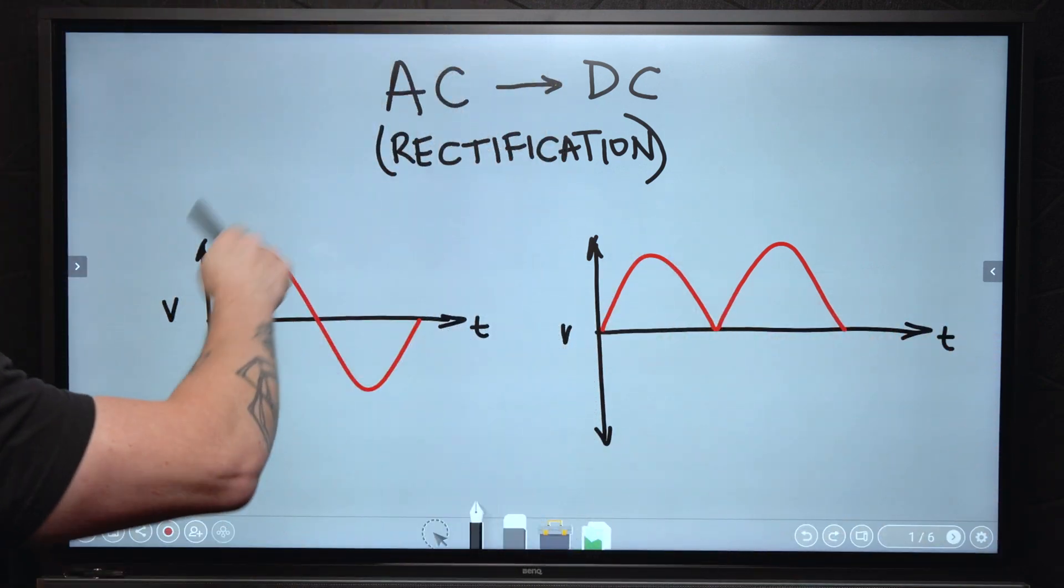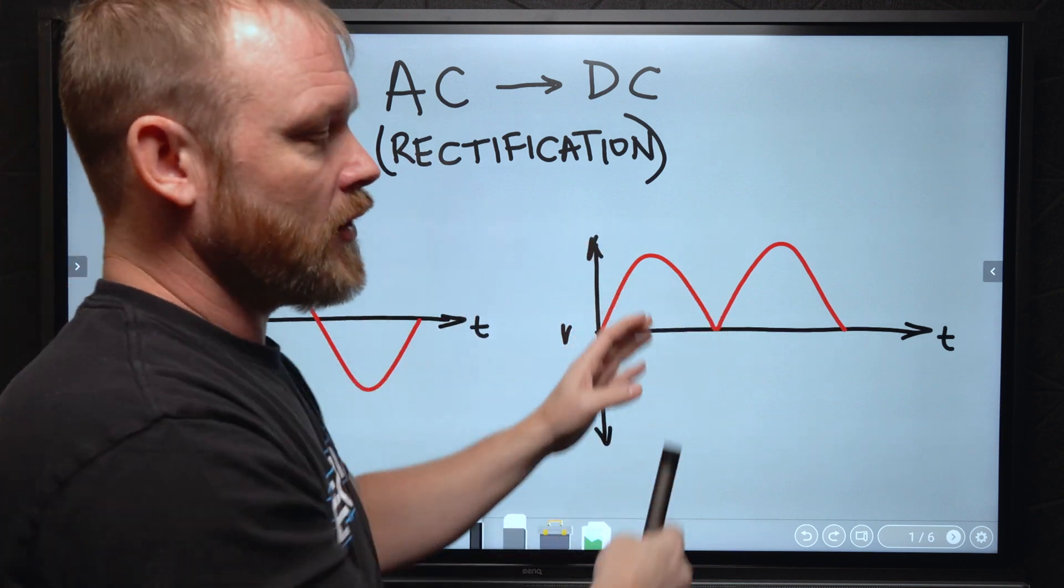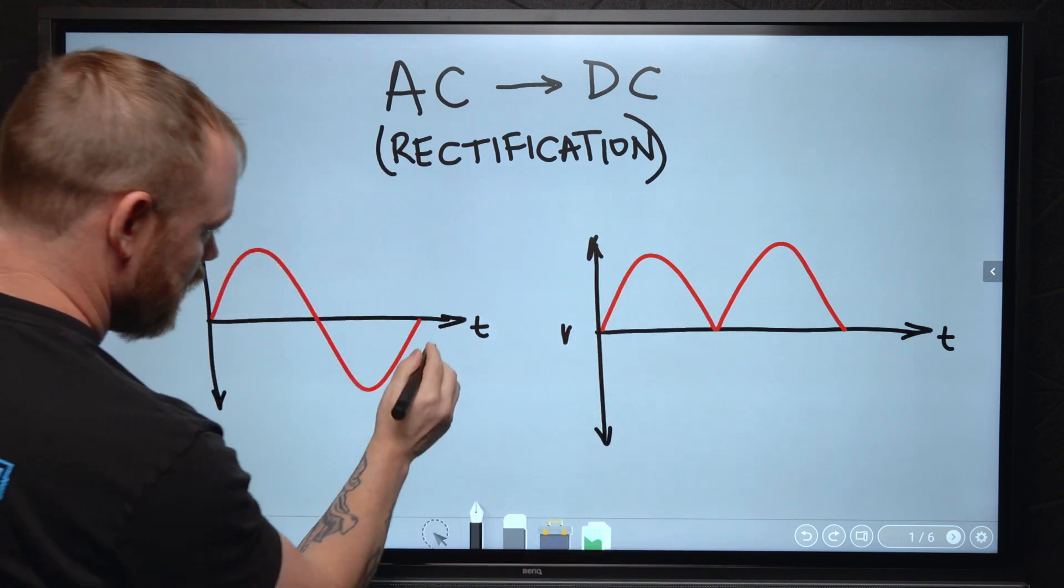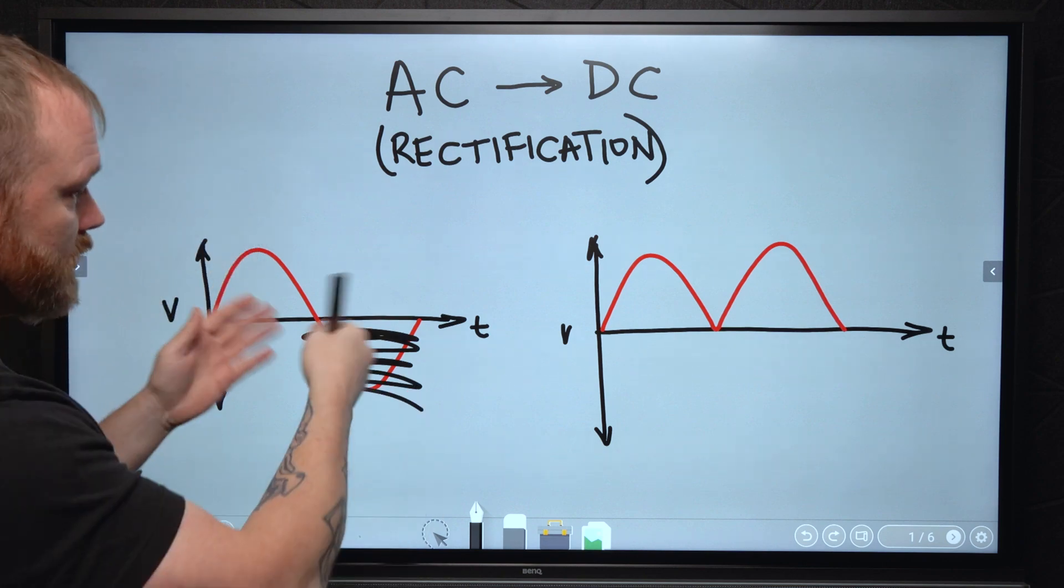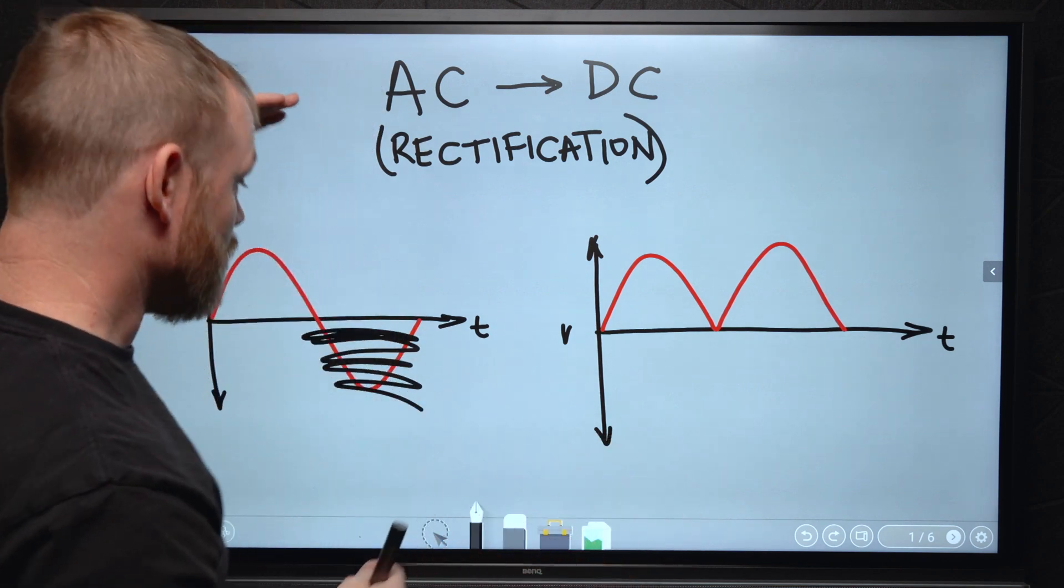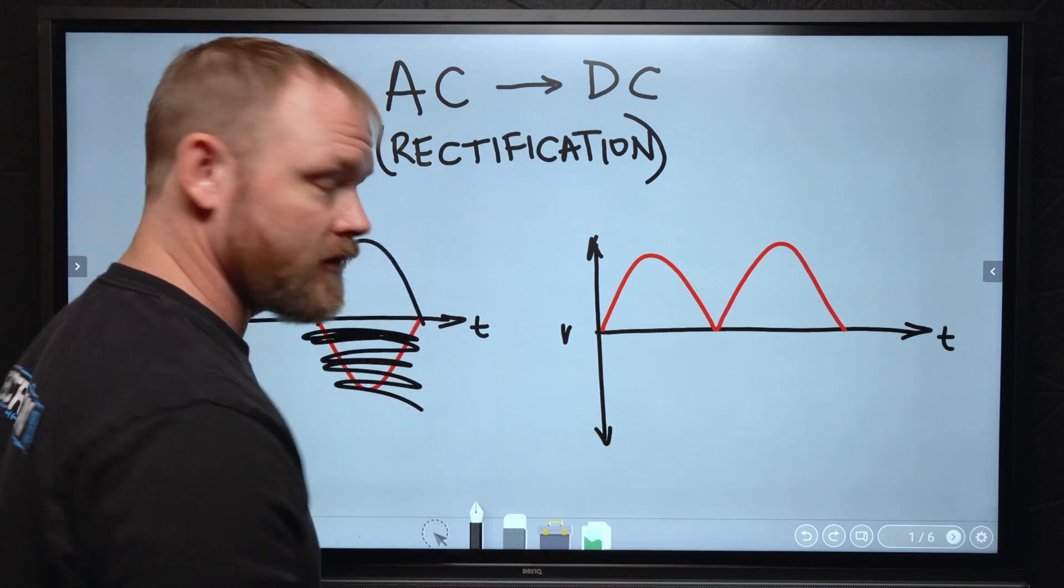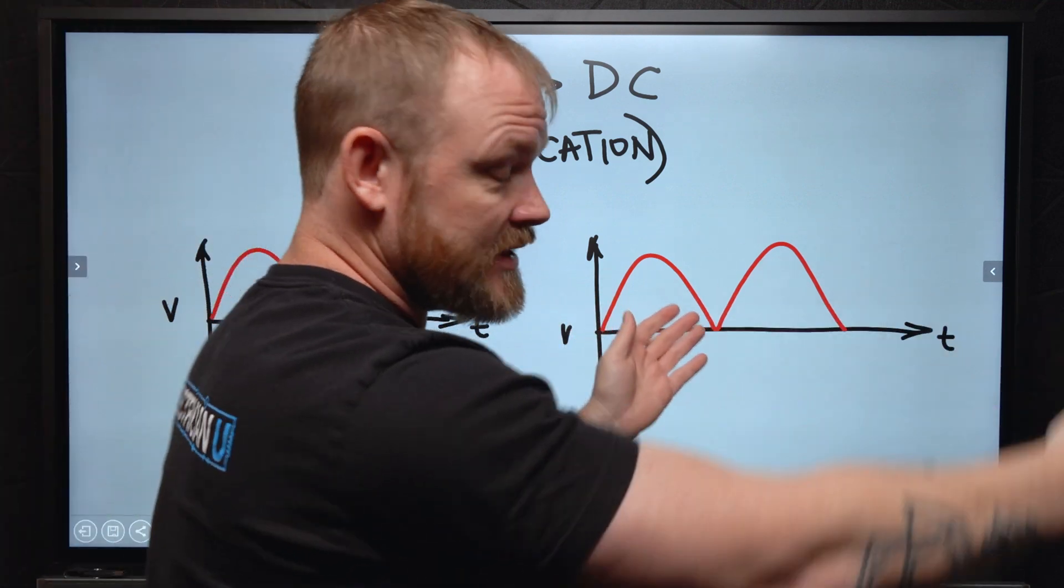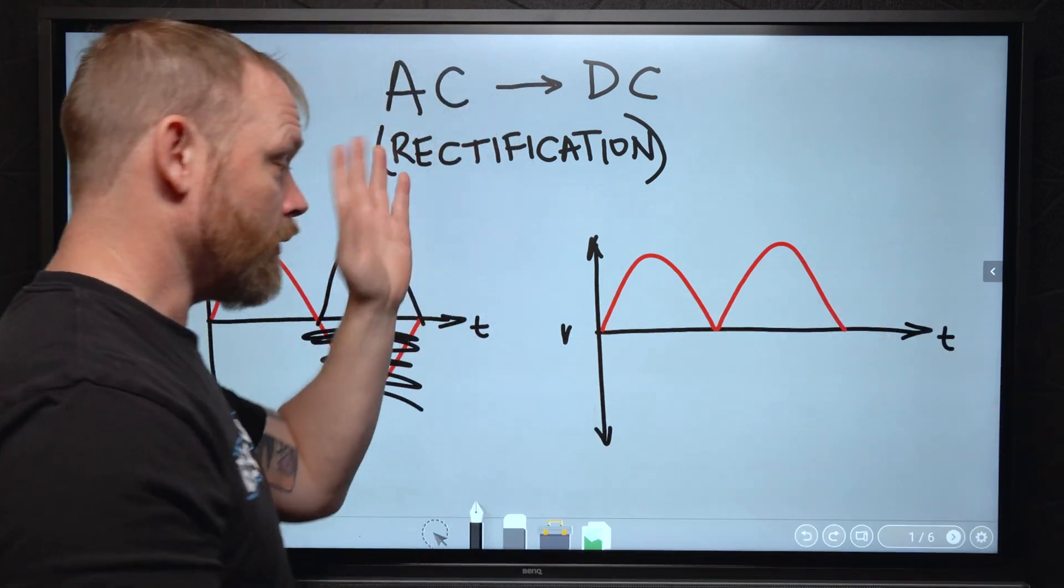So when we've got AC, typically through rectification, all we're doing is we're cutting out the polarity change where we're cutting out like a positive going to a negative and we're flipping that negative to go positive. So that's why we get a pulsing DC signal out when we have a rectifier.